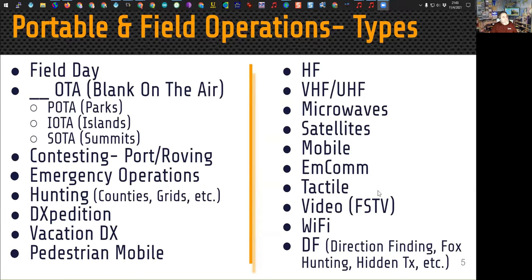Some people like to contest portably — they might set up in a rare multiplier, or go roving to activate multiple multipliers, especially counties or grids. In VHF/UHF contests and state QSO parties, mobiles and rovers are a big portion of the operation. Emergency operations quite often take place in the field because you have to go where the emergency is. And then there are people that like to go hunting for things like counties and grids; some of those don't have active hams, so it's important for someone to go activate them.